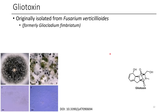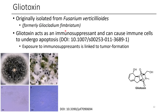The next one is gliotoxin, which is a really interesting looking compound. It has two amide groups, a disulfide linker, and a de-aromatized benzene ring — one of the cooler looking ones in today's episode. It was originally isolated from Fusarium verticillioides. Gliotoxin acts as an immunosuppressant, causing immune cells to undergo apoptosis. Exposure to immunosuppressants can lead to tumor formation through suppression of immune cells, since our immune system normally picks up some tumor cells before they get too bad.